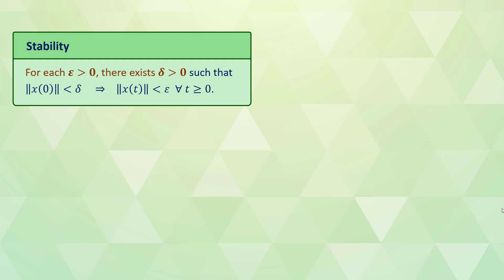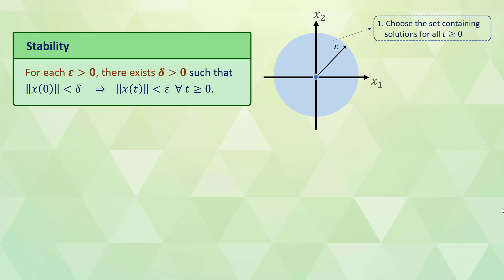We defined stability in the previous lecture. For a stable equilibrium point in the sense of Lyapunov, one can choose any desired neighborhood of the equilibrium in which the solutions should stay for all time, and there always exists a set of initial conditions from which the solutions start and remain in the desired neighborhood.